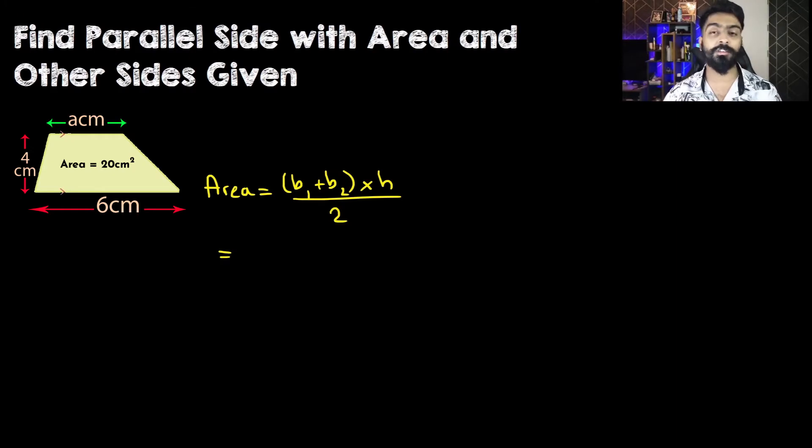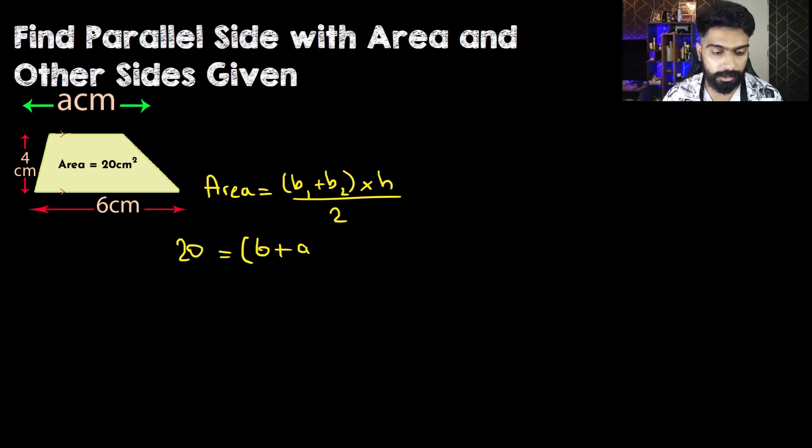Now let's substitute the values that we know from this question. We know that the area is 20. One of the parallel sides is 6, so 6 plus the other one, which is a, multiplied by the height which is 4, and all of it divided by 2.